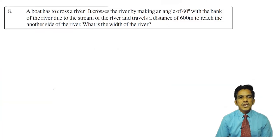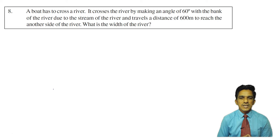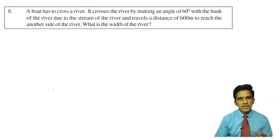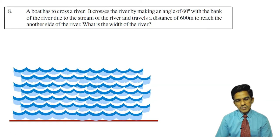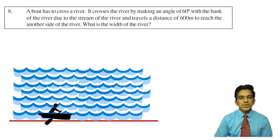Let us look at the next problem, question number 8. A boat has to cross a river. It crosses the river by making an angle of 60 degrees with the bank of the river due to the stream, and travels a distance of 600 meters to reach the other side of the river. Here we have a problem involving a river and a boat. Water is flowing from left to right.